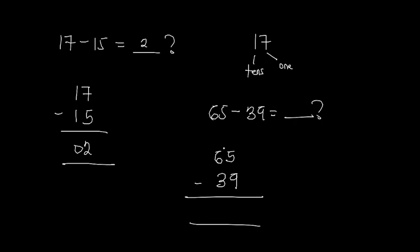We are borrowing from the 6, which in the tens column represents 10. If we borrow 1 from the 6, it becomes 5. That borrowed 1 comes to the ones column and adds to the 5, making 10. So 10 plus 5 becomes 15. Now 15 minus 9 gives us 6. We write down 6. We now have 5 left in the tens column, and 5 minus 3 gives us 2. Our answer is 26.